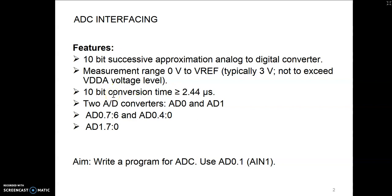With only 2.44 microseconds conversion time, the next feature is it has two A-to-D converters: first called AD0 and second called AD1. In AD0 we have 8 channels available — AD0.0 to AD0.7 — however two channels are not available, so total 6 channels are available to connect different analog sensors. Whereas AD1 converter has 8 analog channels, meaning we can connect 8 different analog sensors, for example temperature sensor, humidity sensor, ultrasonic sensors.